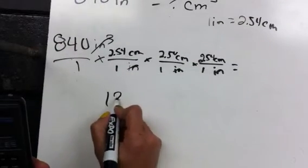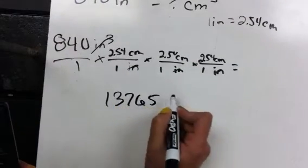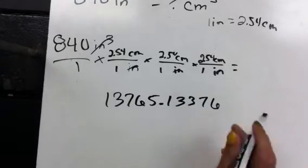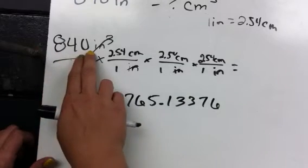All right, so we get 13765.13376. All right, take a look at our sig figs. We only have two, because remember, this zero is just a tens placeholder.